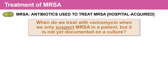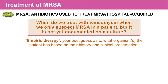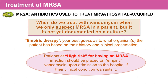The next question is: when do we treat with vancomycin when we only suspect MRSA in a patient, but it's not yet documented on a culture? This is called empiric therapy — your best guess as to what organism the patient has, based on their history and clinical presentation. It's recommended that patients at high risk for MRSA should be placed on empiric vancomycin upon admission to the hospital, if their clinical condition warrants it.